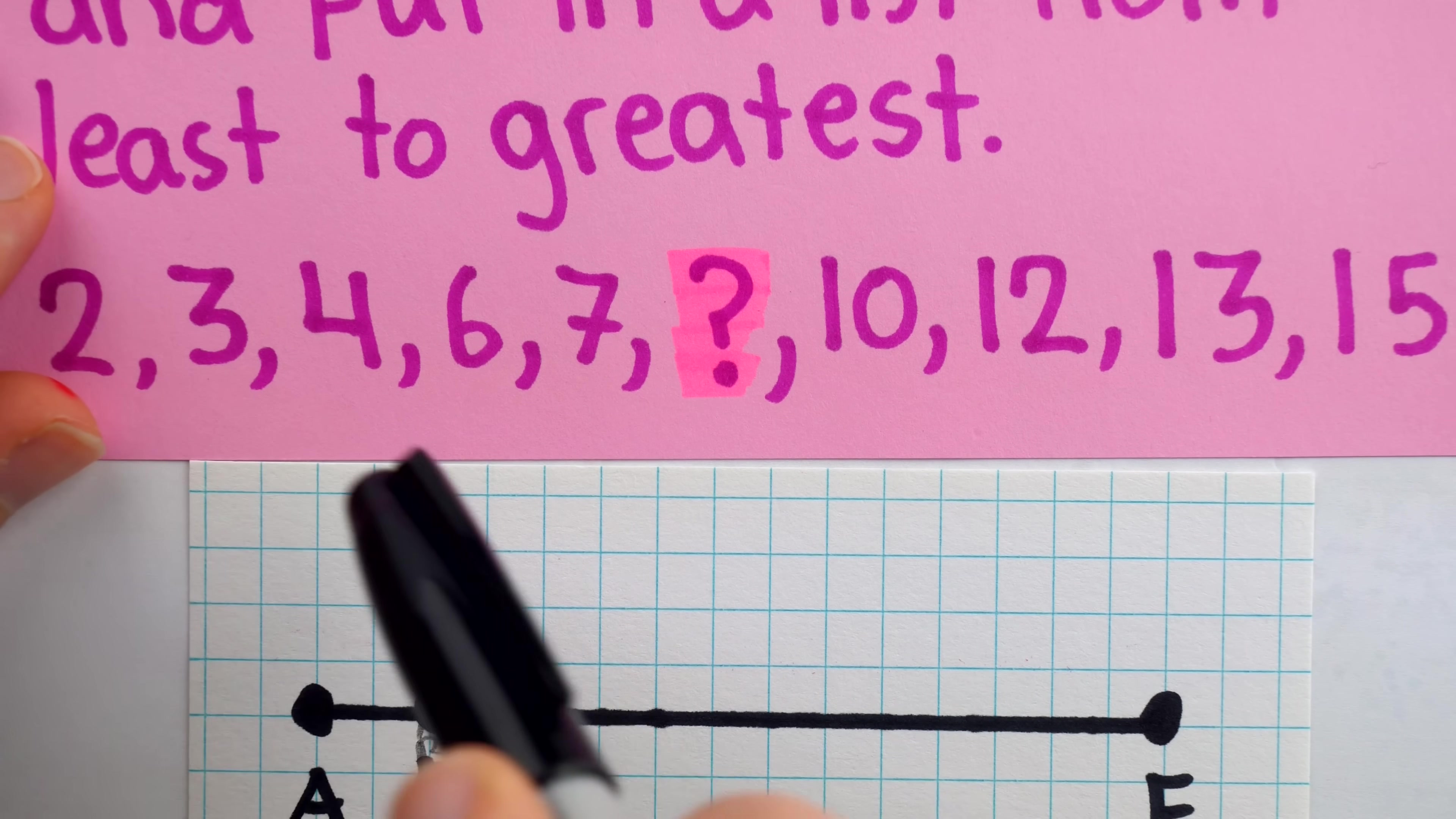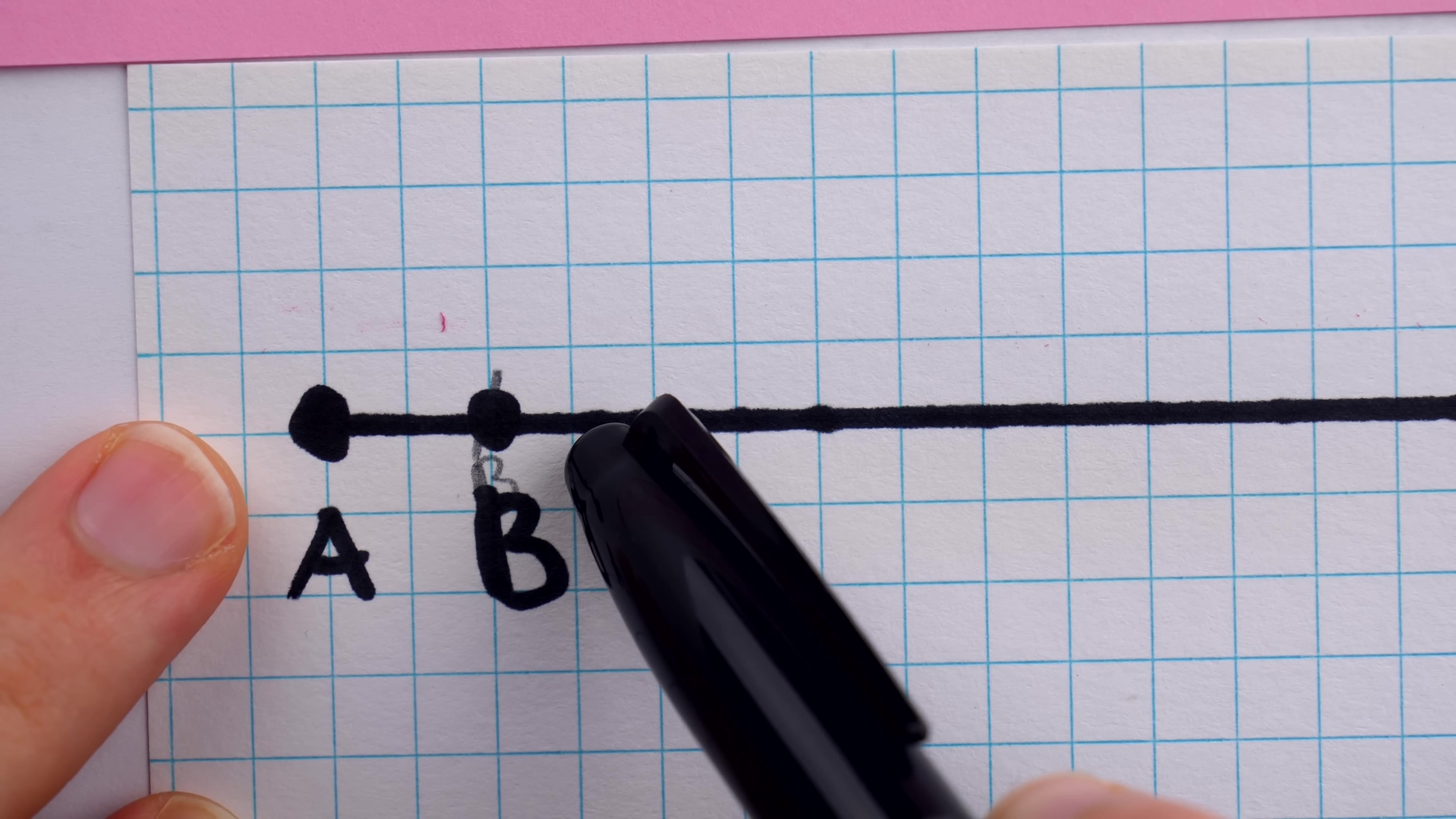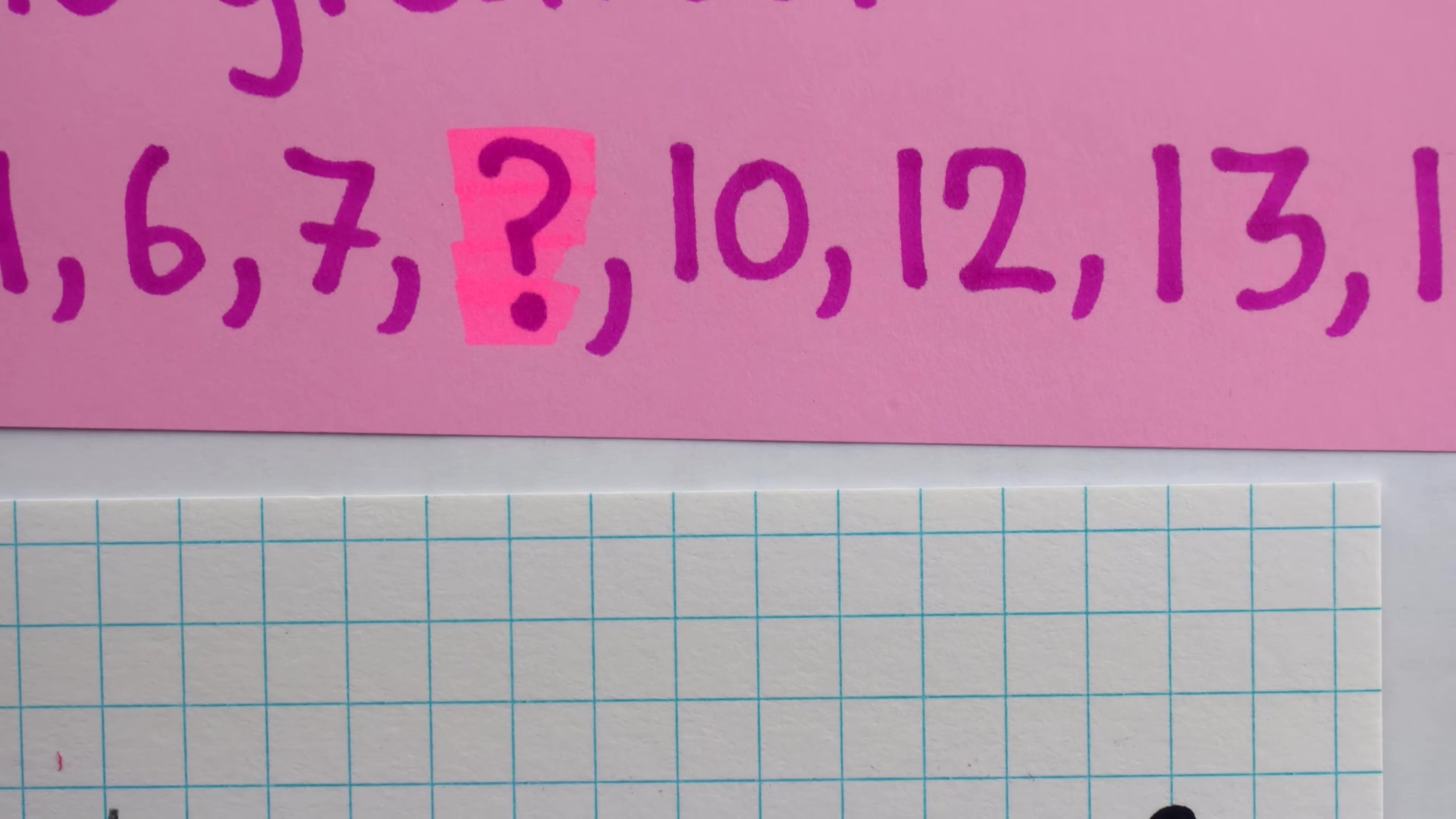Looking again at the list, we also have 3 and 12, which add to 15. We might be tempted then to put the point C 3 units away from A, but then it would have a distance of 1 with B, and we know that 1 isn't on our list, so C can't possibly go there.